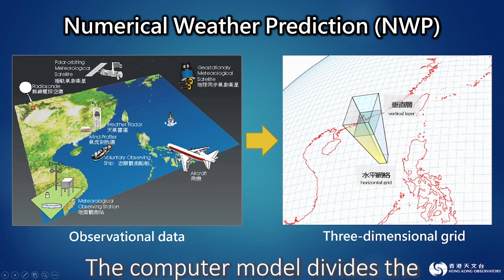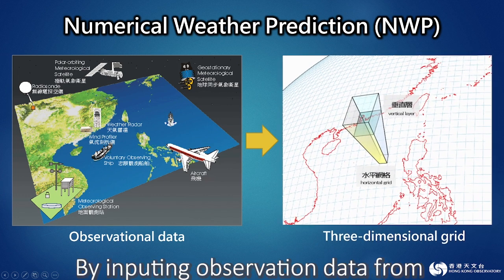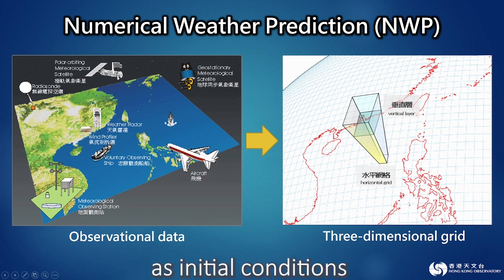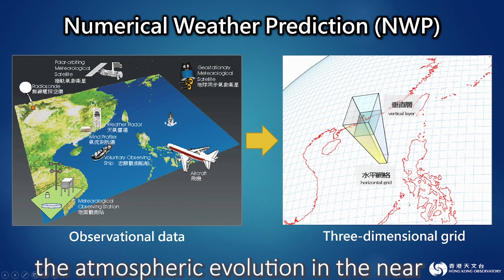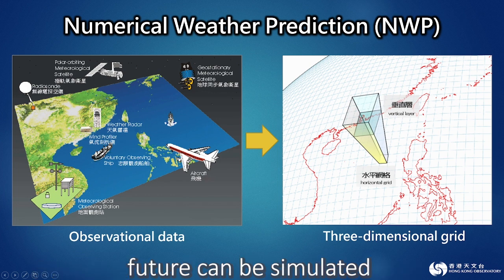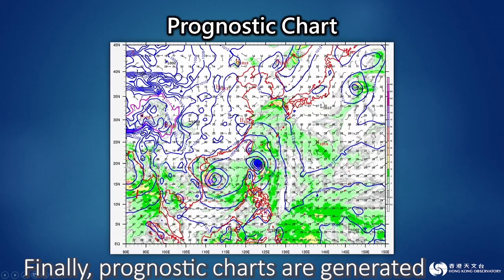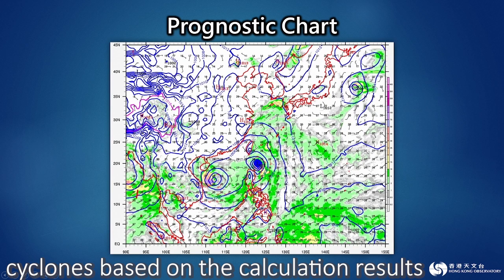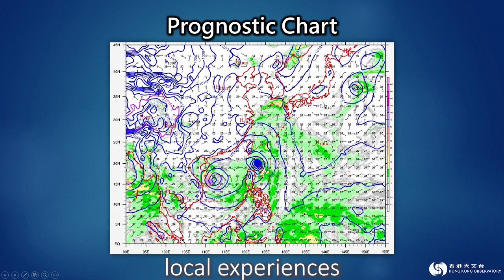The computer model divides the atmosphere into multiple three-dimensional grids. By inputting observation data from meteorological stations, radars, and satellites as initial conditions, and then using them in physical equations, the atmospheric evolution in the near future can be simulated. Finally, prognostic charts are generated for forecasters' reference. Meteorological services forecast tropical cyclones based on the calculation results of computer models and their local experiences.